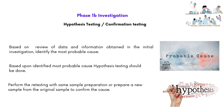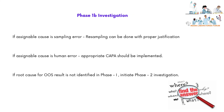Phase 1b investigation also includes hypothesis testing or confirmation testing. Based on a review of data and information obtained in the initial investigation, identify the most probable cause — the most doubtful cause on which the investigator believes may be the reason for OOS results. Based on the identified most probable cause, hypothesis testing should be done. Perform retesting with the same sample preparation or prepare a new sample from the original sample to confirm the cause of OOS. If the assignable cause is sampling error, resampling can be done with proper justification. If the assignable cause is human error, appropriate CAPA should be implemented to avoid recurrence.